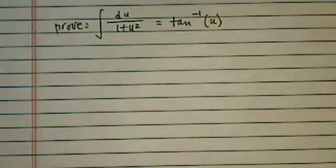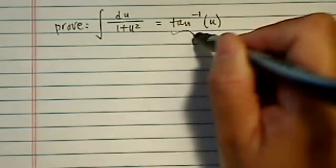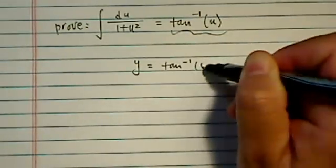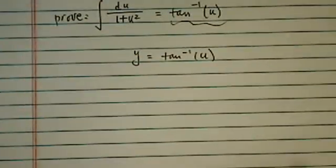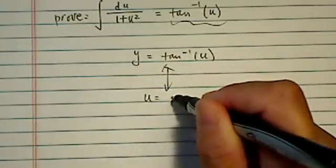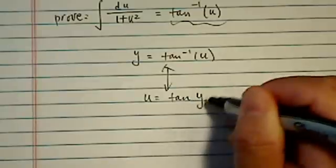Anyway, back to the math. So it starts as this. Using this side, we're going to have y equals tangent inverse u. And by definition, then u equals tangent of y.